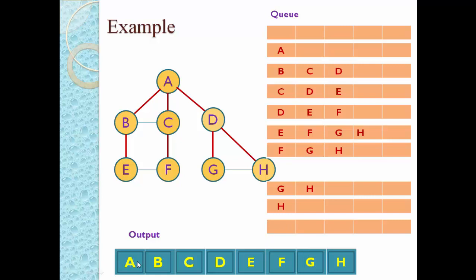The output shows we visited the graph in order: A, B, C, D, E, F, G, H. The red highlighted nodes and edges in the graph form a tree known as the BFS tree. By removing remaining edges — like those between B and C, E and F, and G and H — we get the BFS tree. An acyclic graph is known as a tree, and since there is no cycle in this result, it is a tree.